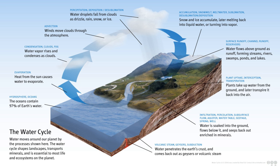During colder climatic periods, more ice caps and glaciers form, and enough of the global water supply accumulates as ice to lessen the amounts in other parts of the water cycle. The reverse is true during warm periods. During the last ice age, glaciers covered almost one-third of Earth's land mass, with the result being that the oceans were about 122 metres lower than today.